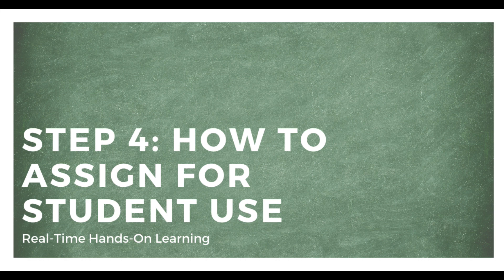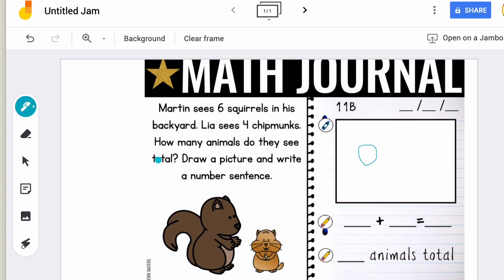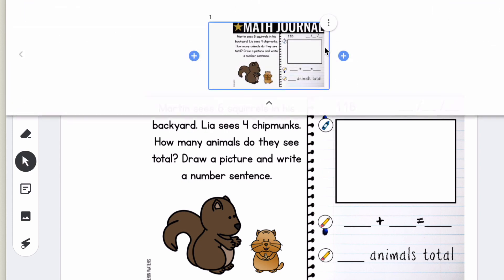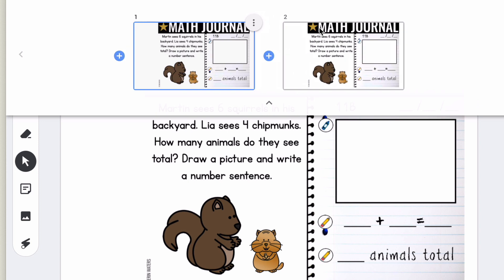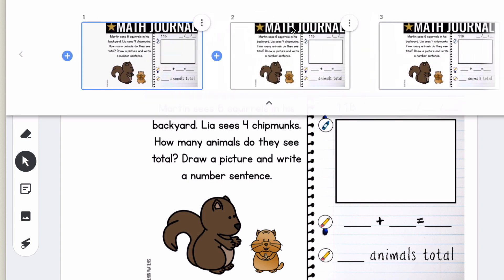If you're working with small groups, you can also assign these to different students. Jamboard only allows you to create up to 20 slides in one jam, so it's not ideal for larger classes, but if you have fewer than 20 students this is definitely an option. To assign these, you would simply click up here and duplicate the slide for each student.